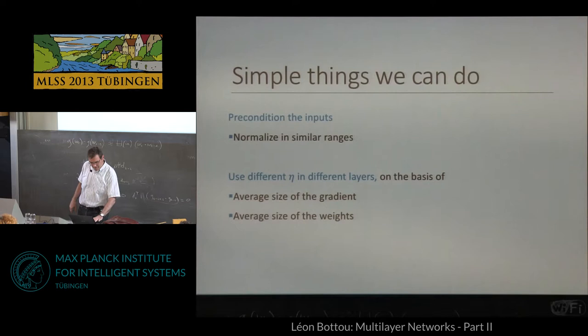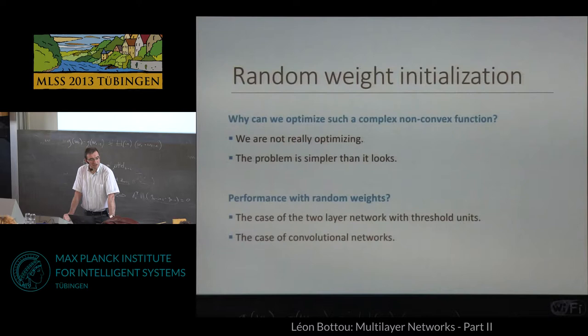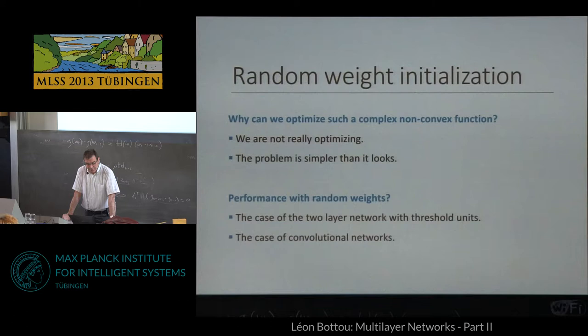There is something very important: the initialization. The first question to ask is, why is it that we can optimize these crazy neural networks at all? If you just look at this as a non-convex smooth problem in one billion dimensions and ask any reasonable optimization person, they're going to tell you you're crazy. Non-linear non-convex optimization in ten dimensions is considered very challenging — so one billion dimensions? The thing is that we're not really optimizing. We're just finding relatively good solutions, trying to get the test set optimum, not the training set optimum. The problem is actually simpler than it looks.